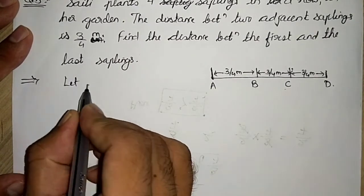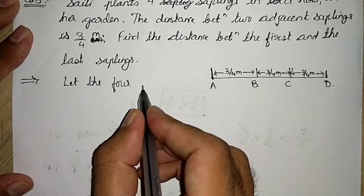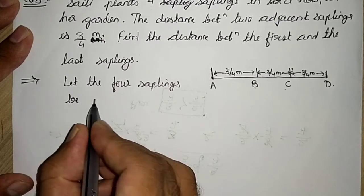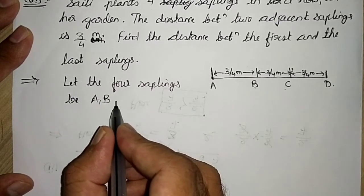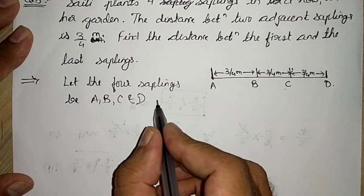Let the four saplings be A, B, C and D respectively.